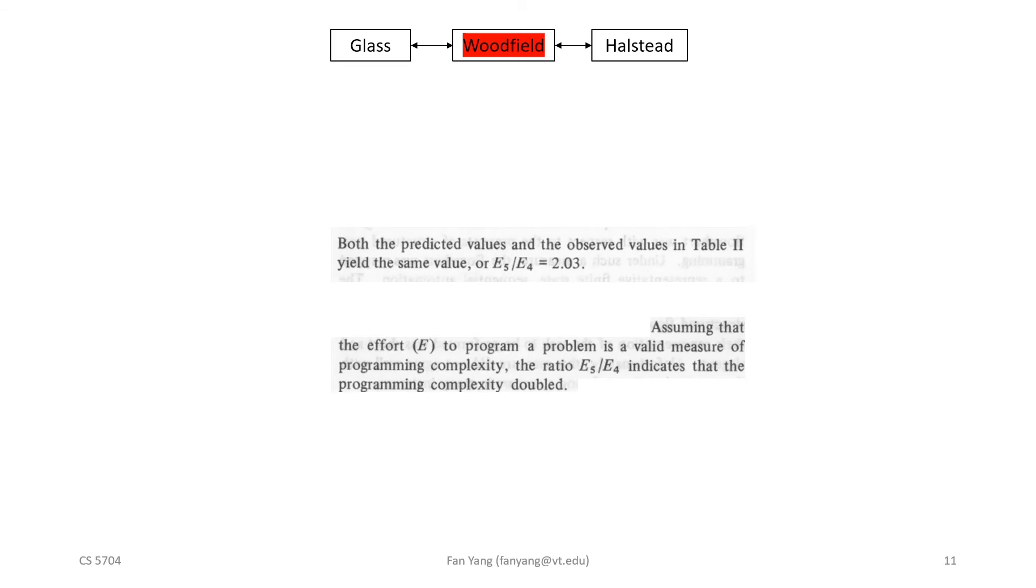To summarize, before running the experiment, Woodfield used Halstead's theory to predict how big implementations would be. Then he got a bunch of grad students to implement both versions of this problem before counting the number of operators and operands they used to see how they changed. The analysis just involved checking if the observations matched up with the expectations, and they did. And this is how Woodfield empirically validated Halstead's theoretical model. So that's the quick and dirty summary of where this 25%, 100% rule came from. Let's go back and reflect on Fact 21.